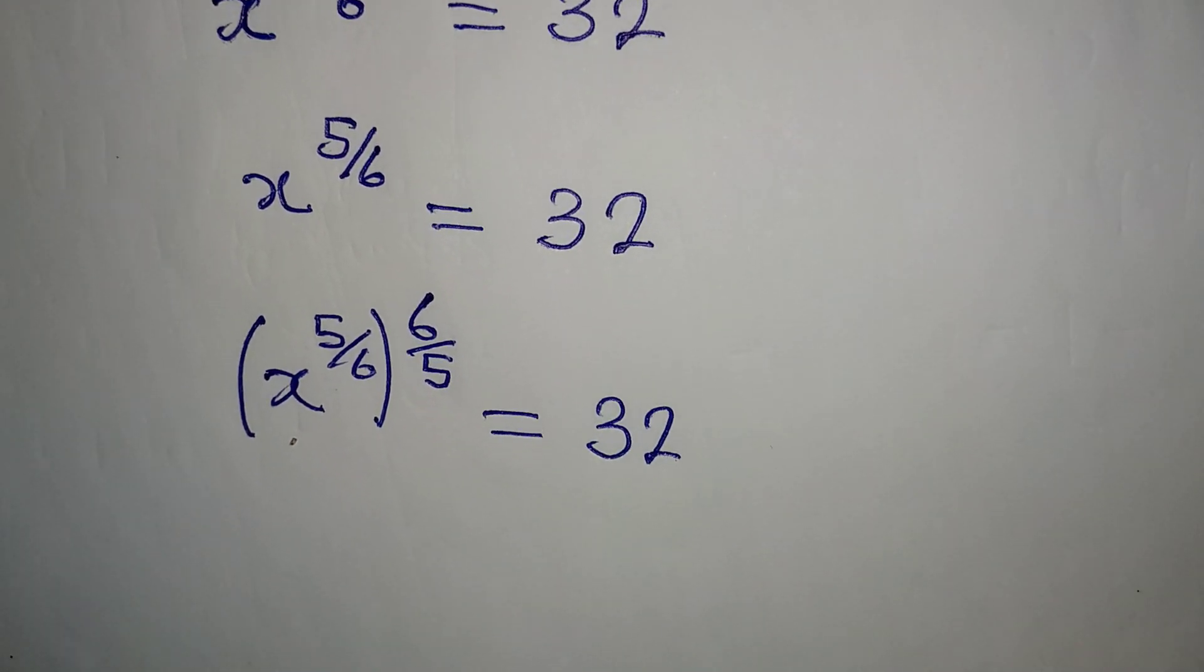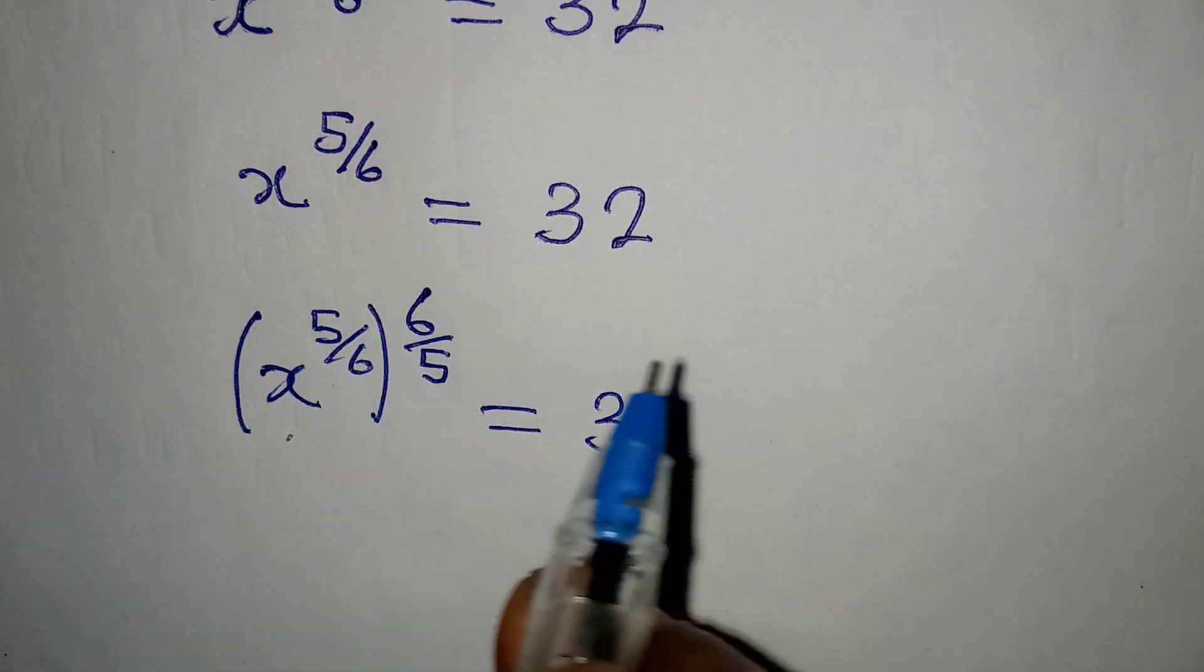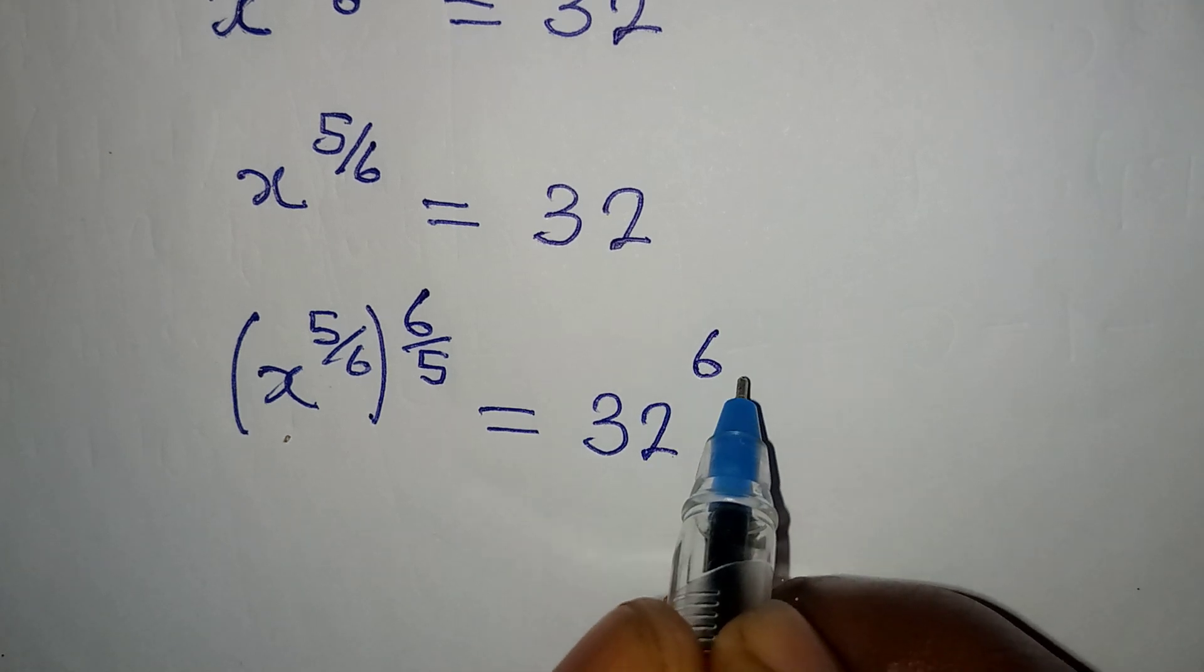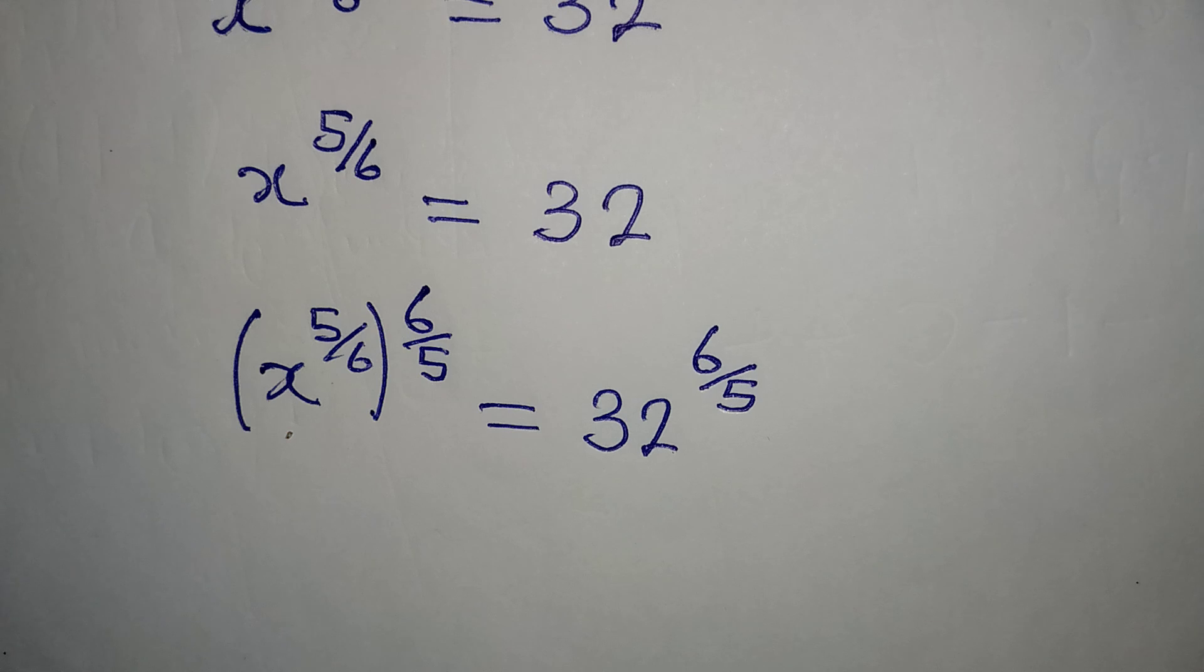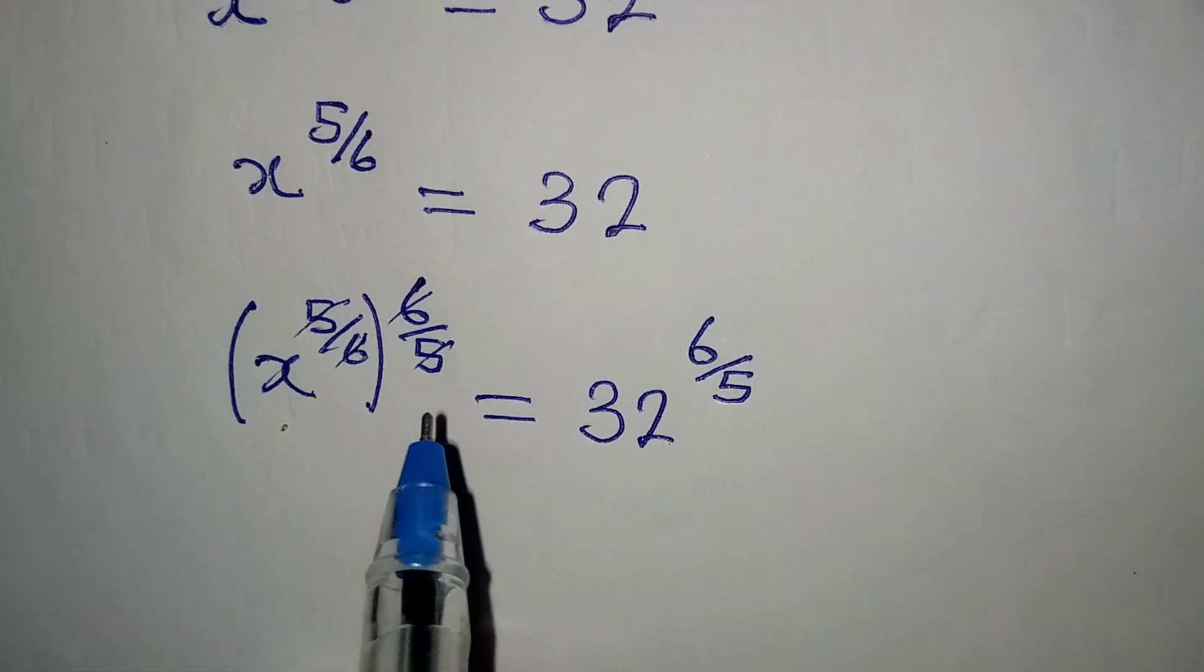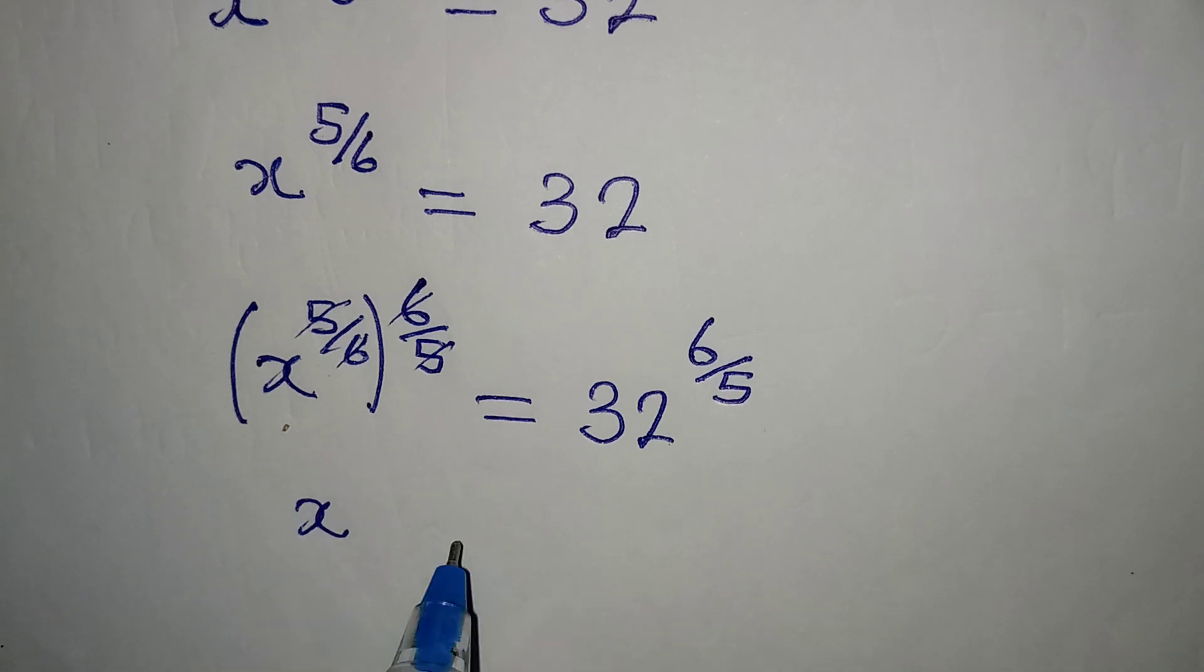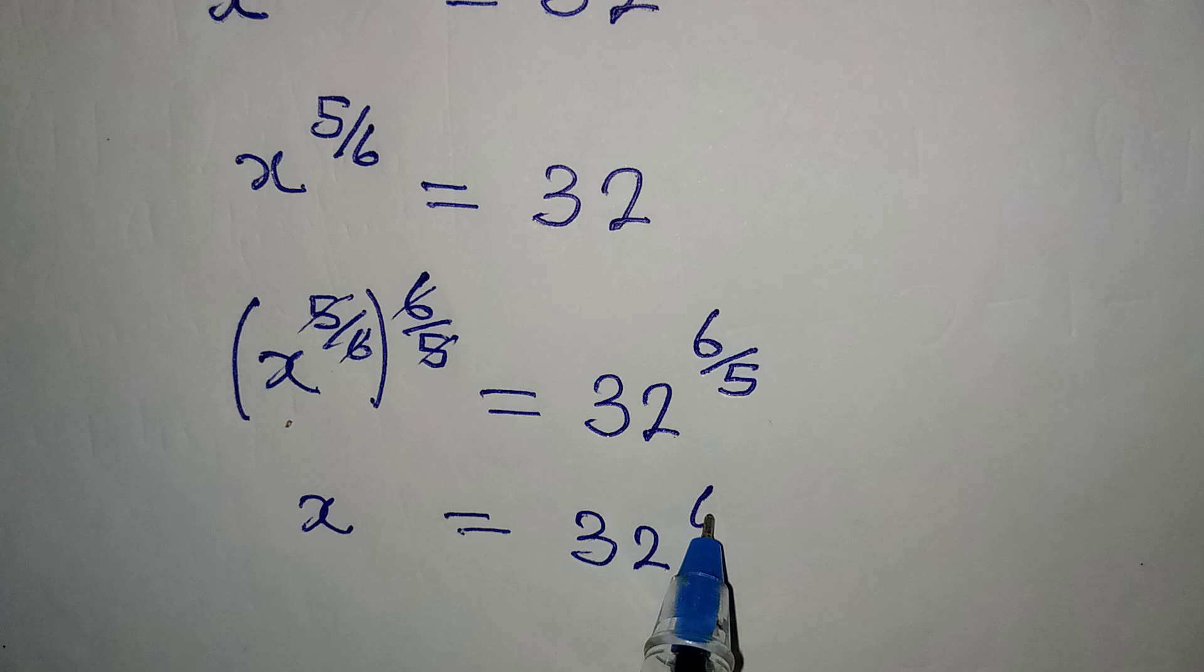But now that I introduced the reciprocal of 5 over 6, it has to reflect on the right. So we have power of 6 over 5 on the right. Now 6 will cancel 6, 5 will go with 5. If x is alone, it is equal to 32 to the power of 6 over 5.